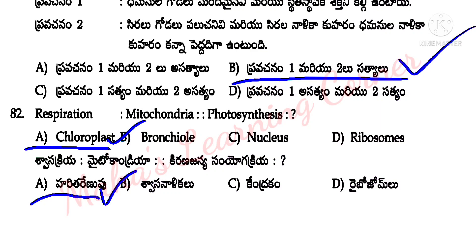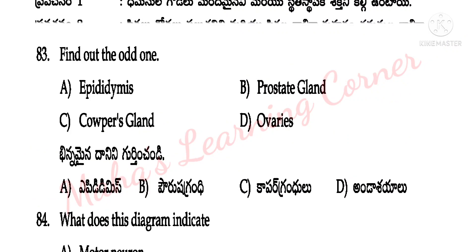Respiration occurs in the mitochondria. Photosynthesis occurs in the chloroplast. So option A is the correct answer.